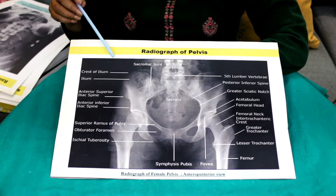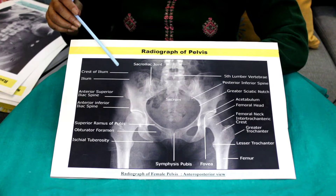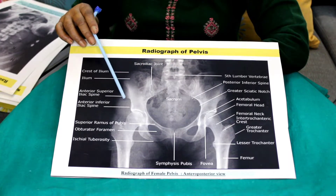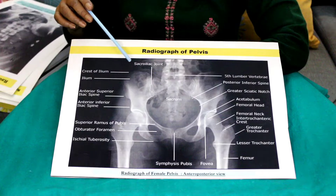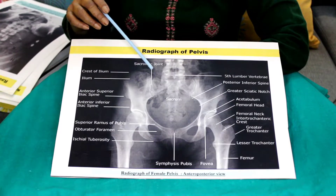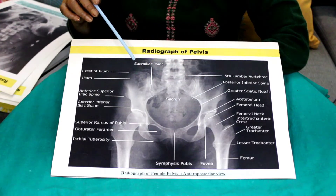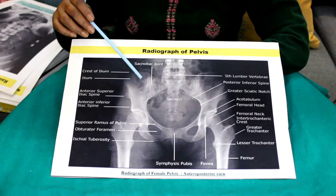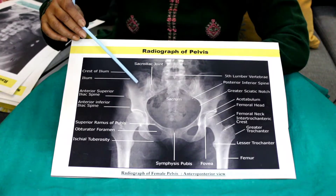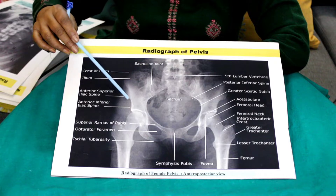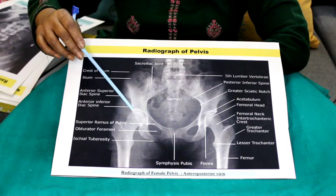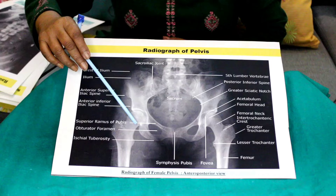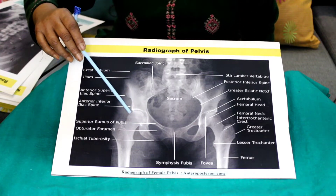Hi everyone. This is the radiograph of the hip joint anteroposterior view, or you may say this is the radiograph of the pelvis. In this you will see the outline of the hip bone, and you can see this is the acetabular margin and this is the acetabular cavity.